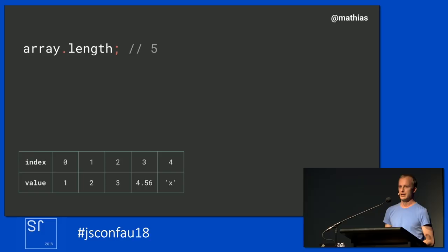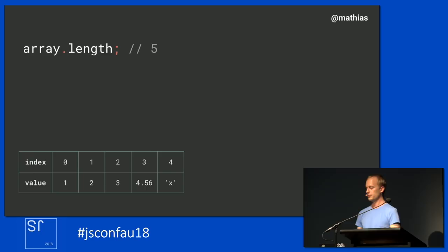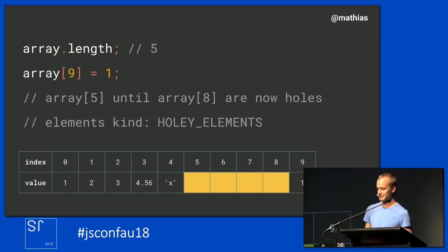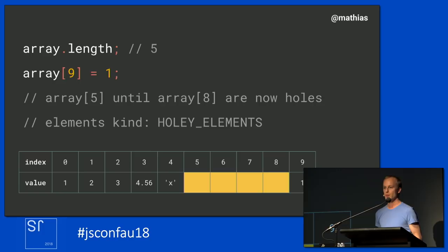Going back to our array with five elements: what happens if we assign a value to an index far outside the array's boundaries, say position nine? Doing this creates holes in the array — positions five through eight are now holes. The array is now sparse, or 'holey,' as V8 calls it. Creating holes in the array downgrades the elements kind to its holey variant — in this case, from packed elements to holey elements. Other ways of creating holes include using the delete operator on an indexed element, or having an array literal with two commas and no value in between.